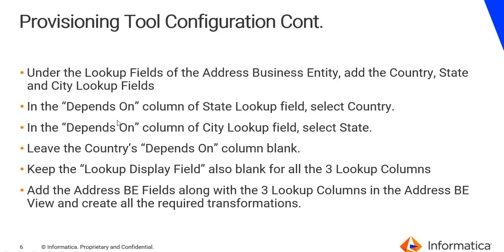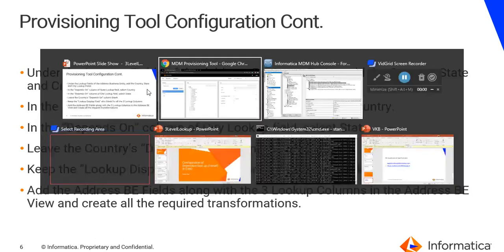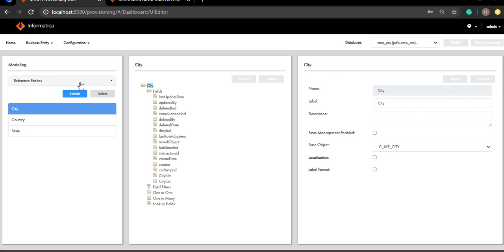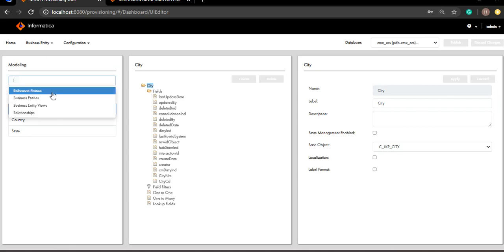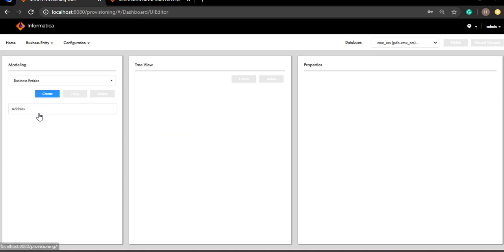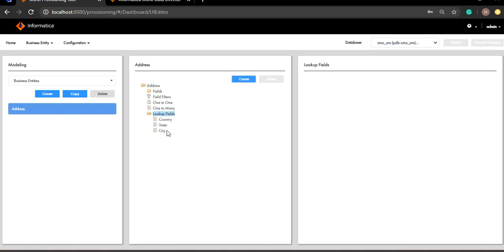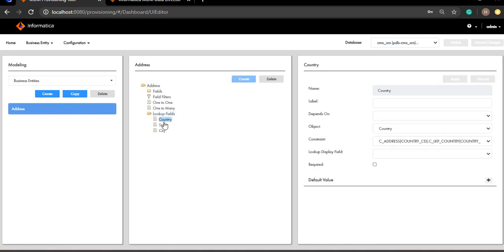Now I'll go to the lookup fields of the address business entity and I'll add the state, country and city lookup fields. So under the business entity, I'll come to address, and under lookup fields, I'm going to add state, country and city.